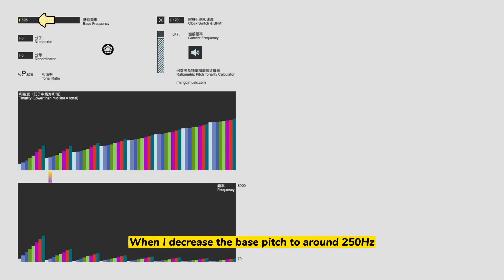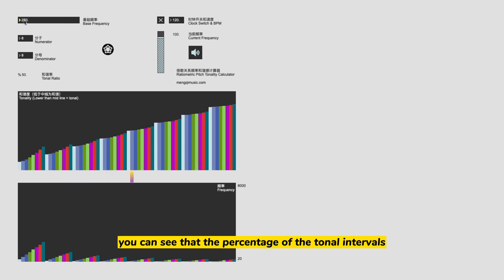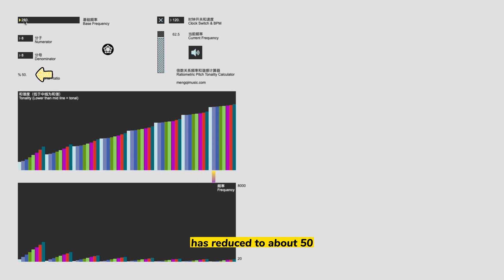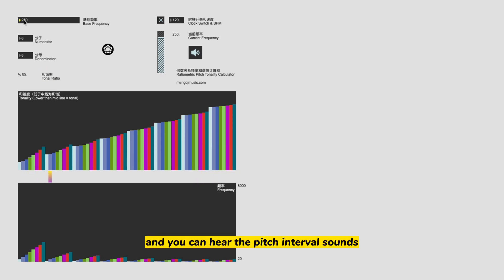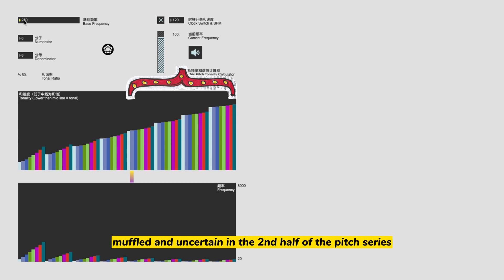When I decrease the bass pitch to around 250 Hz, you can see that the percentage of tonal intervals has reduced to about 50%, and you can hear the pitch interval sounds muffled and uncertain in the second half of the pitch series.